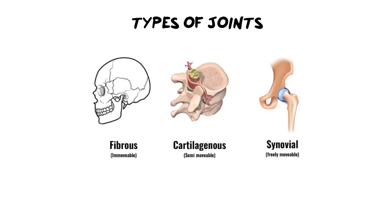Moving on to the types of joints that these bones will create. We have joints because this is where the intersection of two bones meet, and depending on what part of the body it is and how much movement there needs to be will determine which of three joints is produced. The first kind is a fibrous or immovable joint. We see this in our skull, between the sutures of all the bony plates — they are not movable; they were once separate and now they fuse together.